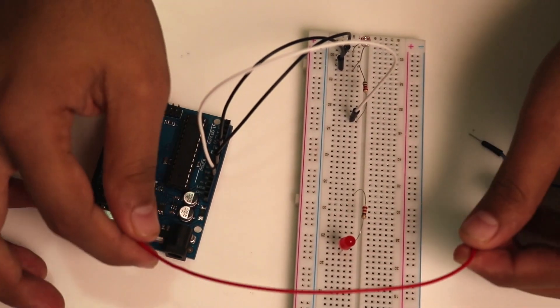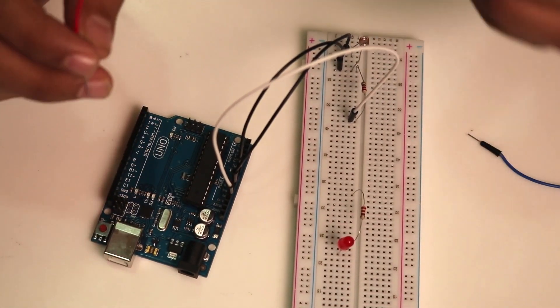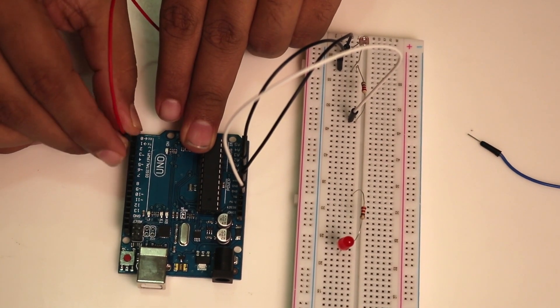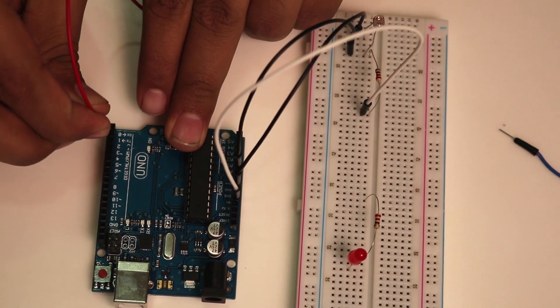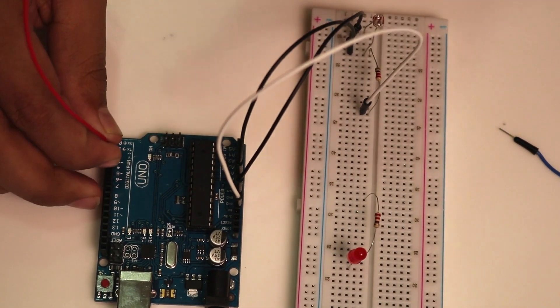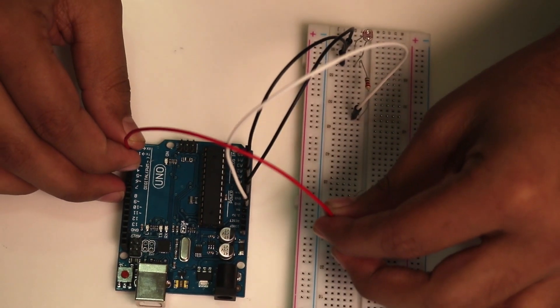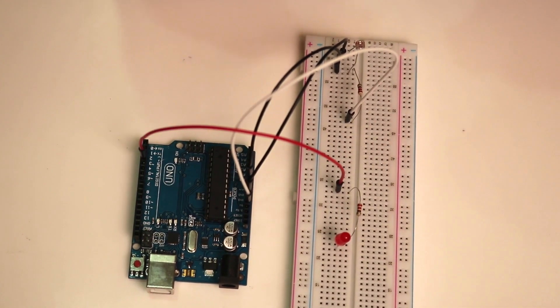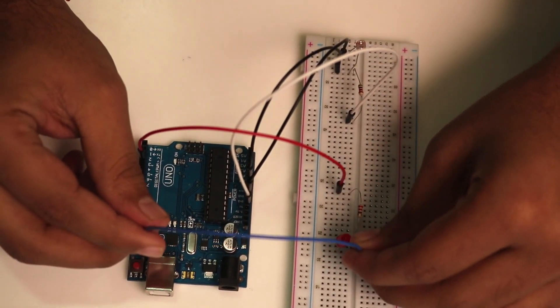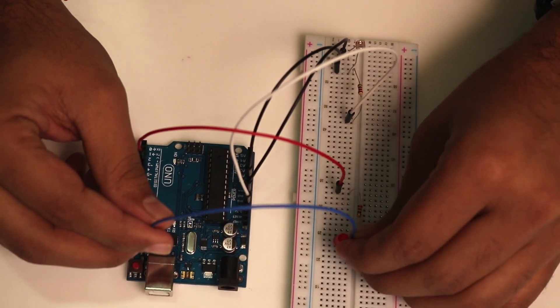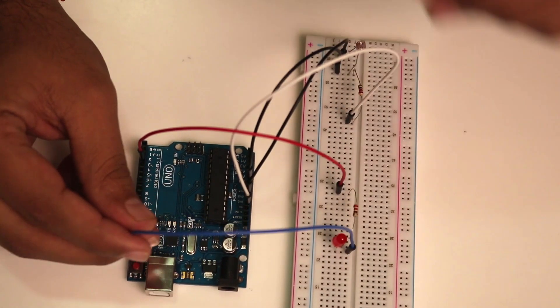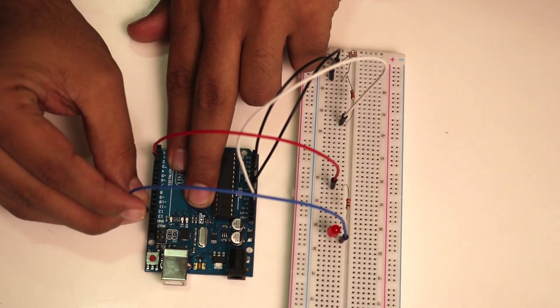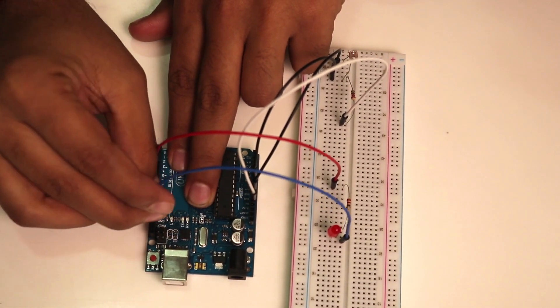Let's connect the LED. I'm using pin number 3 as the input to the LED. This is pin number 3 to the LED as an input. Now let's connect the ground of the LED - that is the negative pin of the LED to the ground of the Arduino.